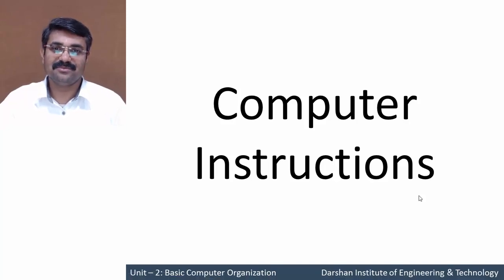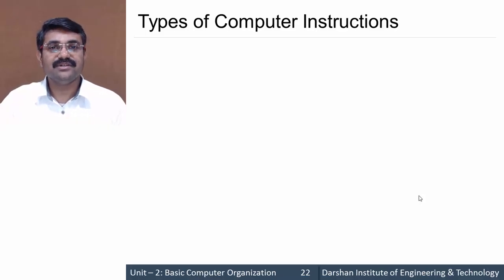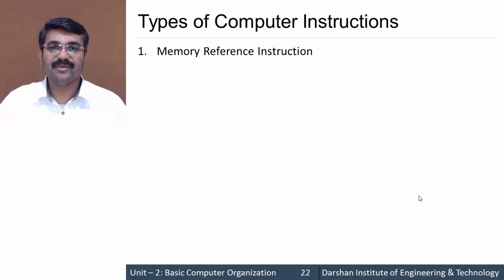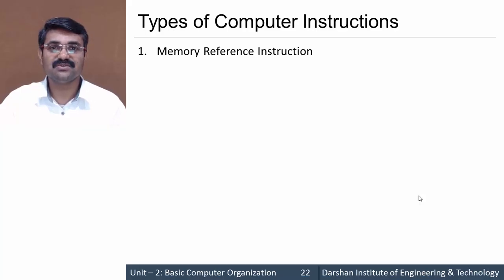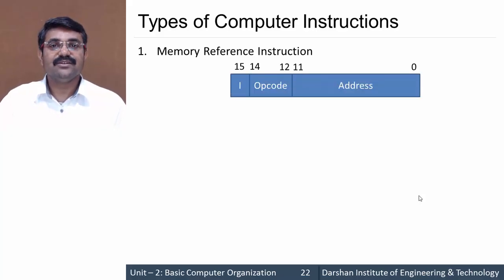In this session we'll discuss computer instructions for the design of the basic computer. We require certain computer commands that are instructions for the basic computer. In our system we have three types of computer instructions. Number one is memory reference instruction, meaning these instructions deal with memory operands — the operand provided is fetched from memory, stored in the accumulator, and processed.